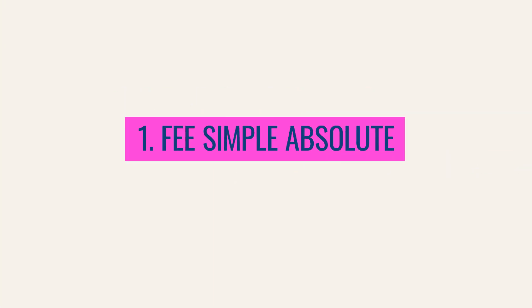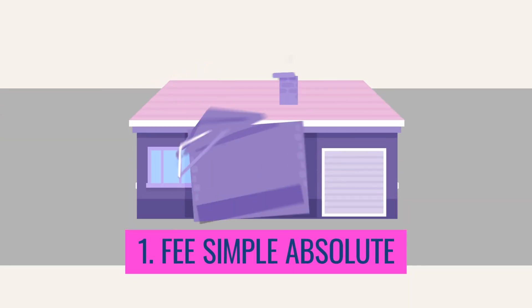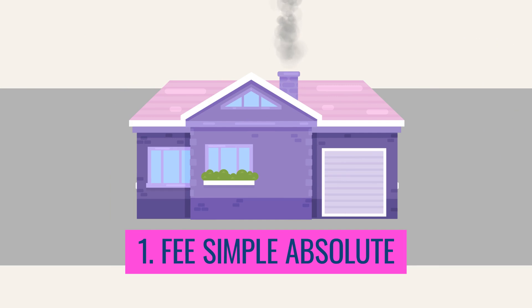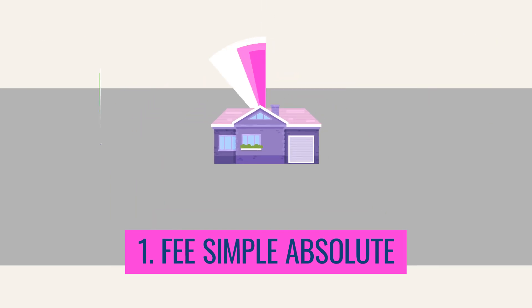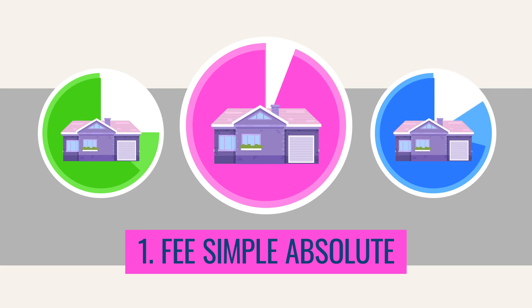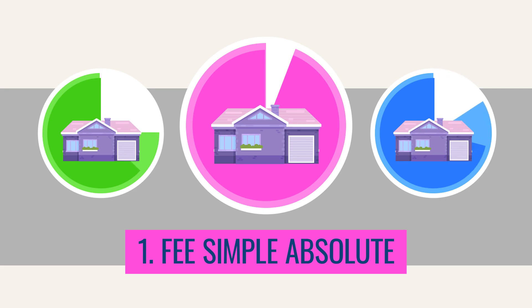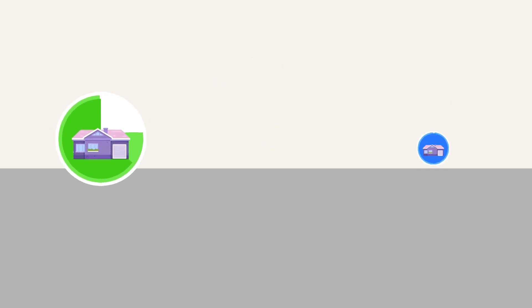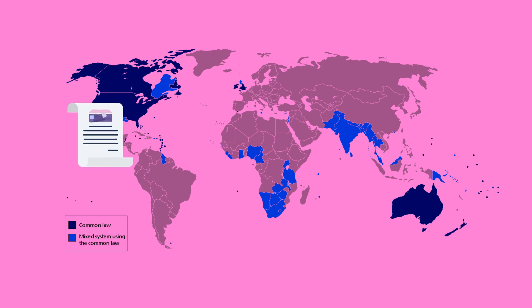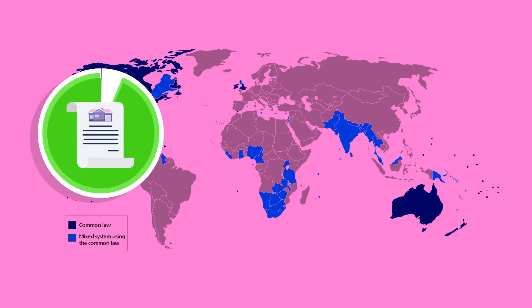Fee simple absolute is an estate in land. Ownership cannot be defeated by the previous owner or the previous owner's heirs. However, it's not free from encumbrances. Fee simple absolute is the greatest interest in a parcel of land that one could possibly own. Sometimes it's designated simply as fee. It is the most common way real estate is owned in common law countries and is ordinarily the most complete ownership interest that can be had in real property, short of absolute title.